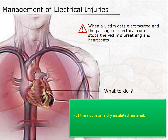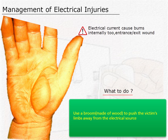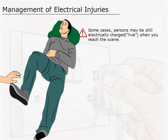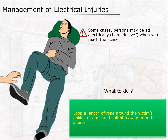For example, a wooden box, plastic mat, etc. — basically any material where current cannot flow. Electrical current can cause burns internally too. In this case, use a broom made of wood to push the victim's limbs away from the electrical source. This will decrease the injury. In some cases, persons may still be electrically charged or live when you reach the scene. In such a situation, loop a length of rope around the victim's ankles or arms and pull him away from the source.